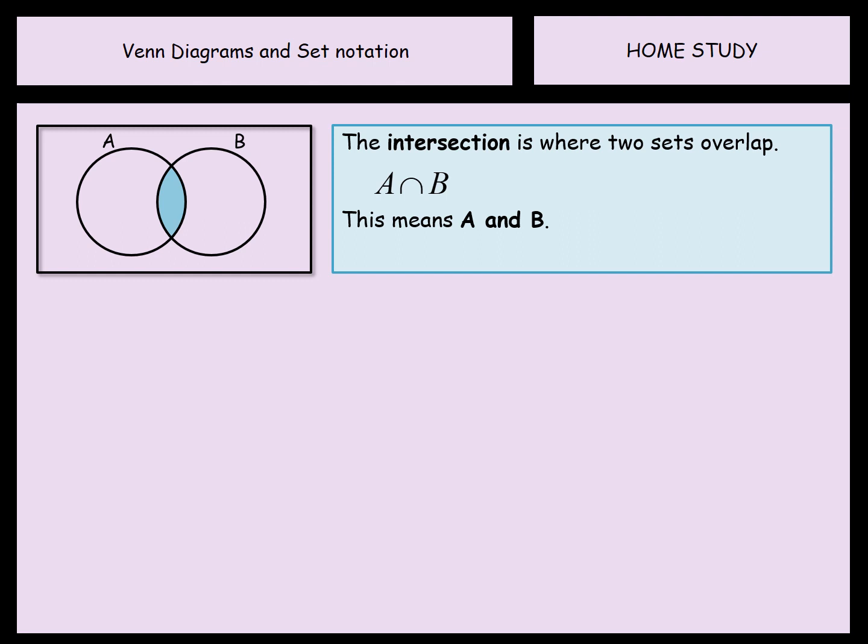So in terms of describing these sections of the Venn diagram, this little bit here, I talked about it before as being the crossover. The technical word for it is the intersection and we use this symbol and we're talking about it being AND. Now when I learned this I remembered that the N in AND looked a little bit like this symbol here and so this is A and B, the section that is in both A and in B.